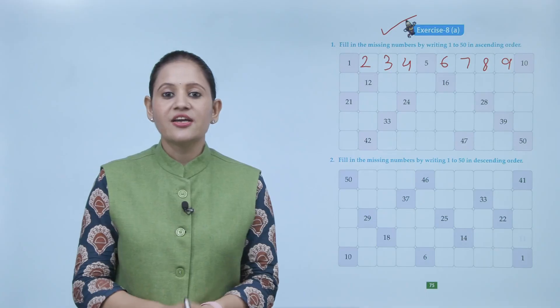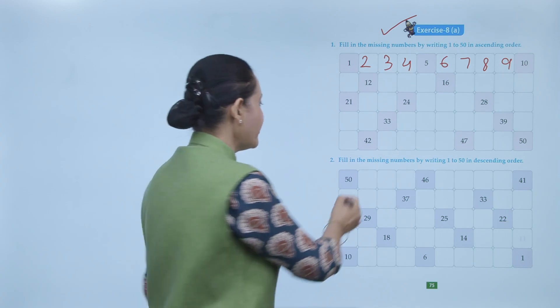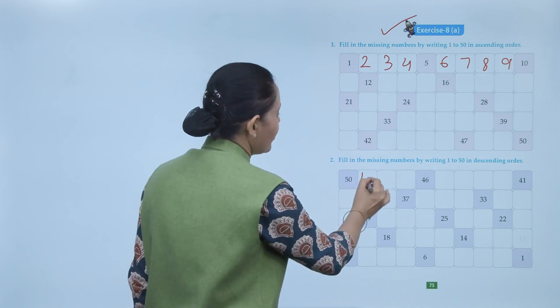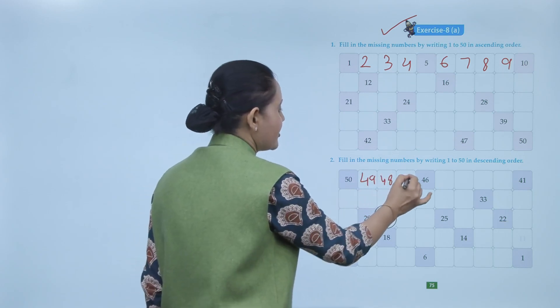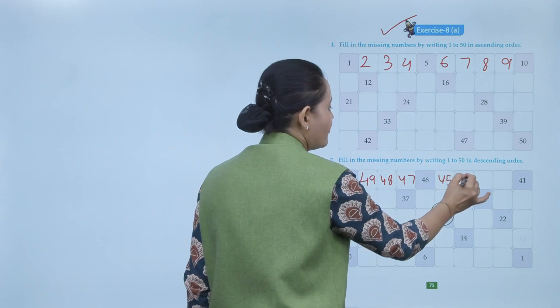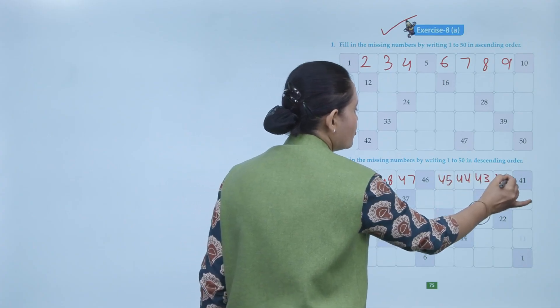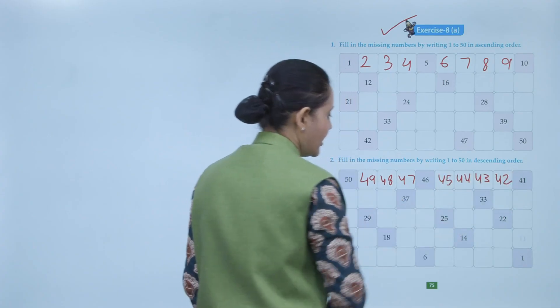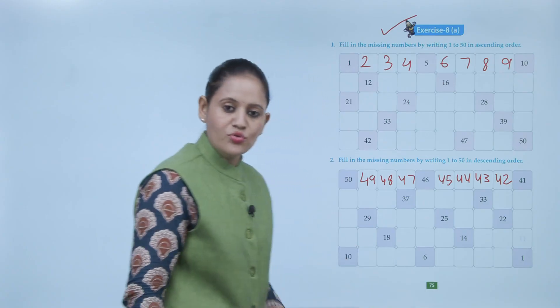Next, fill the missing number by writing 1 to 15 in descending order — means backward counting. So: 50, 49, 48, 47, 46, 45, 44, 43, 42, 41 — like this you will write numbers back down to 1.